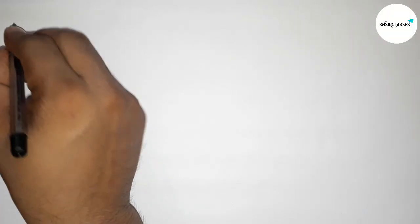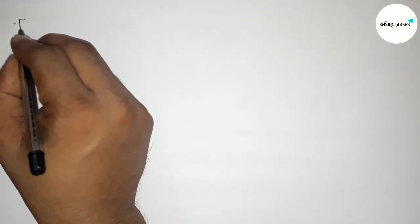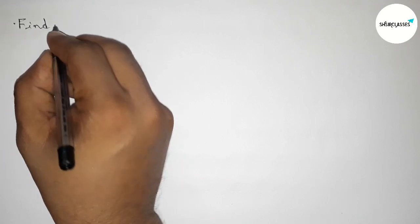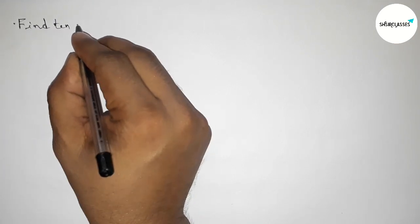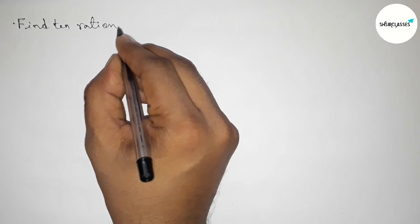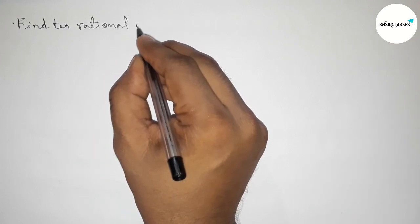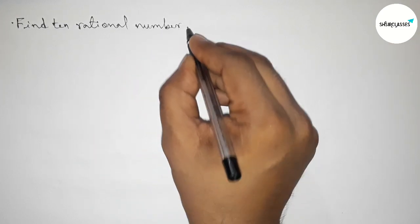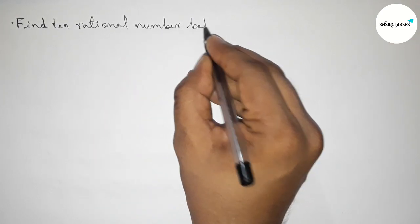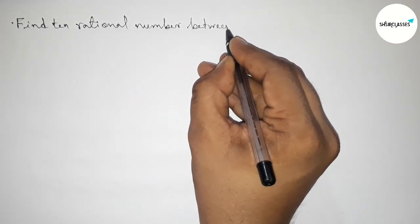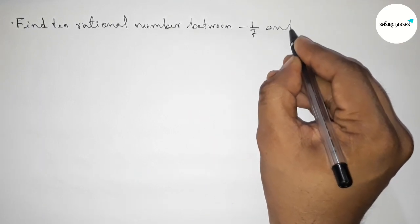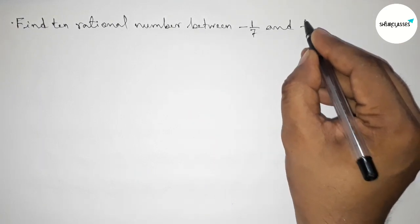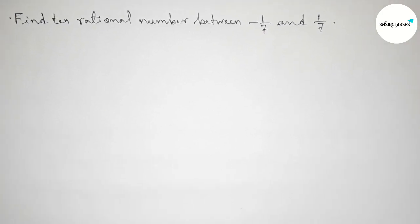Hi everyone, welcome to SI Share Classes. Today in this video we have to find 10 rational numbers between minus 1 by 7 and 1 by 7 in an easy way. So please watch the video till the end.